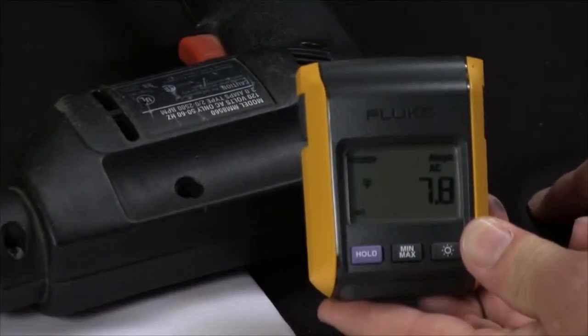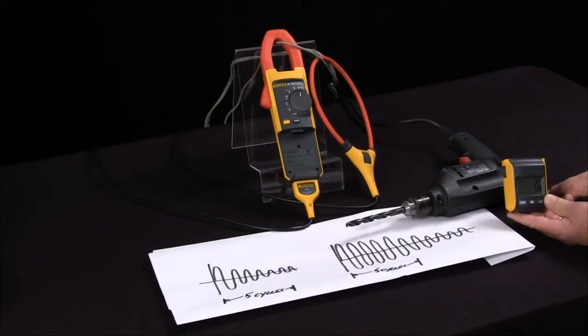So this is how we can measure inrush current with the Fluke 381 advanced remote display clamp meter.